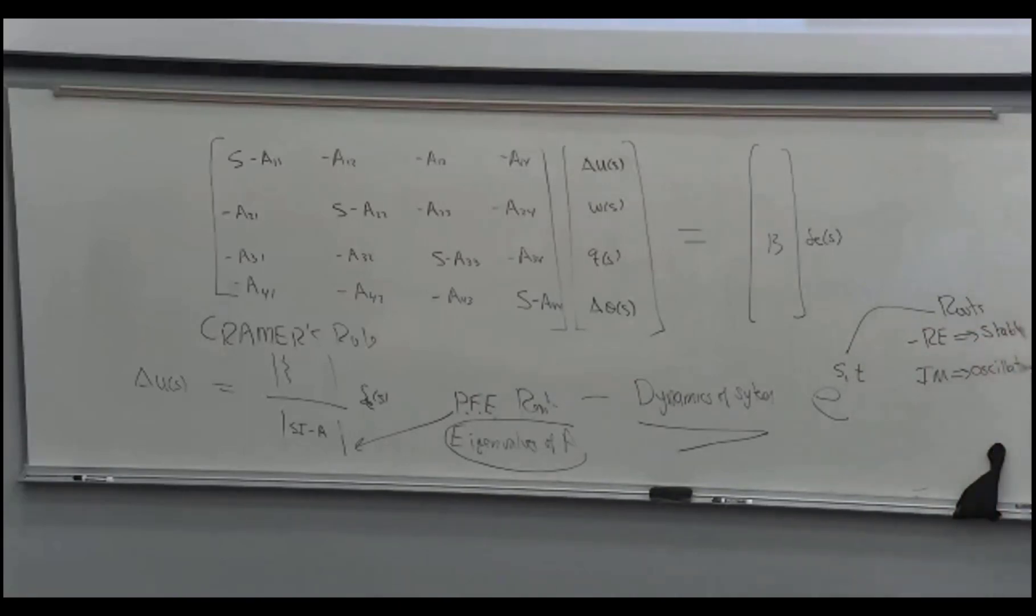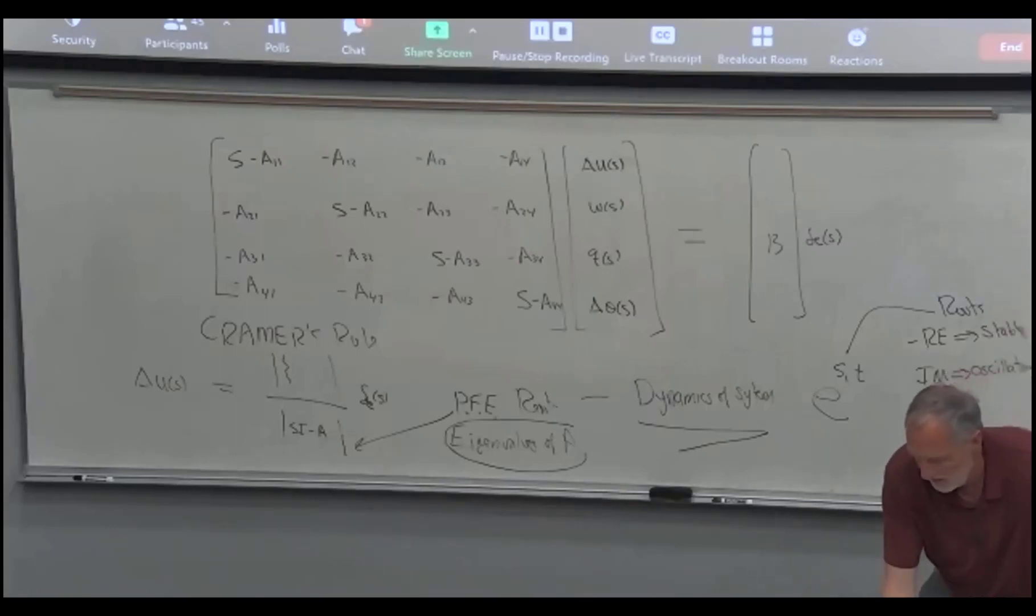So these are common, and I'm gonna put a bunch of words in here. Roots of the characteristic polynomial, that's one thing we call them. We call these the eigenvalues of the A matrix, because they're the same thing. They're the roots that go into the partial fraction expansion. But in dynamics, these are called the modes of motion. So these are the common modes of aircraft.